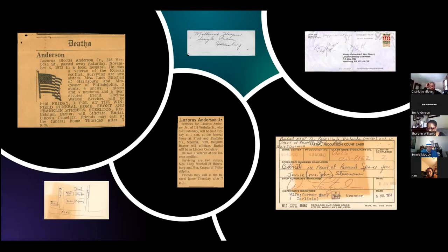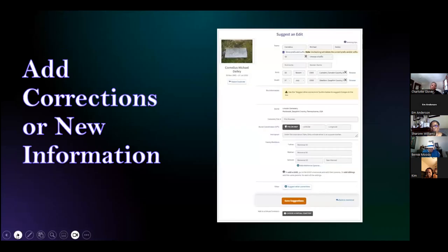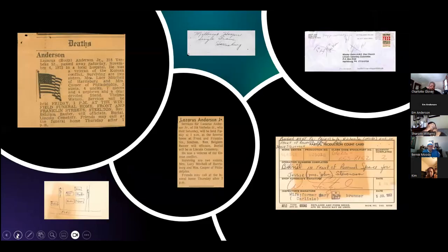Please do not delete any records from the folder — just leave all as you found it. If there happens to be a newspaper article or a death notice or obituary in one of the folders, you may upload that to the memorial by pressing on the photo button on the memorial page. It says add photos, and if you follow the directions, you will be able to upload that information.